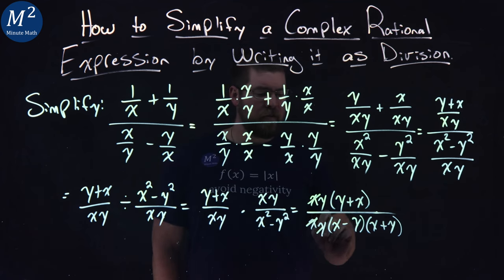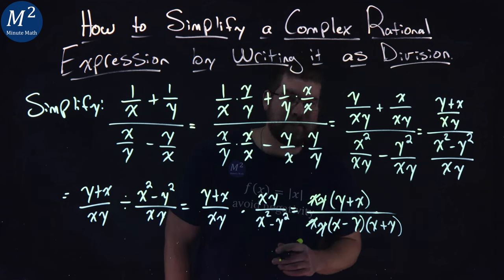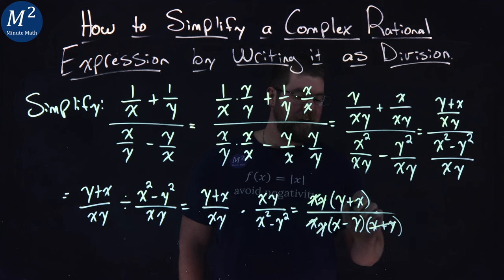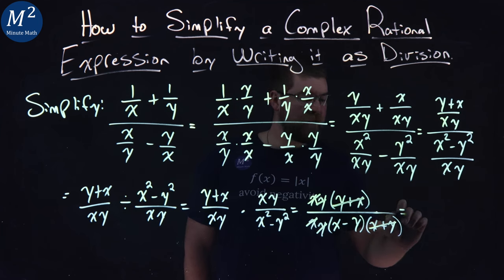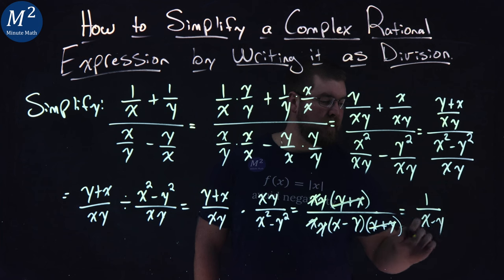X is cancel. Y is cancel. We got xy numerator and denominator. Great. y plus x is the same thing as x plus y. They cancel. So, what are we left with? We're left with just a 1 over an x minus y in the denominator.